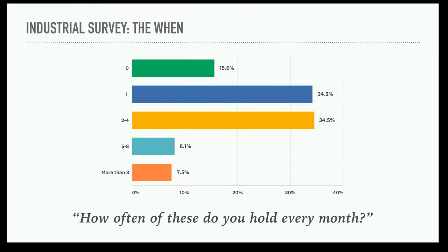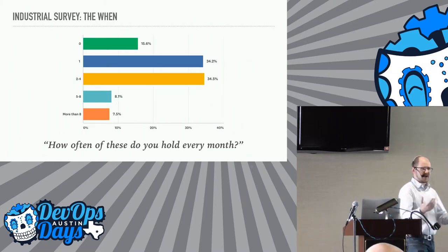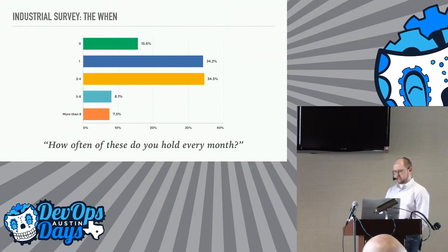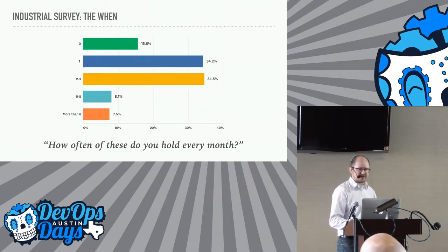Fifteen percent never hold one per month — don't hold a retro at all. Maybe their systems are stable and everything just works all the time. Most people do them about once a month or tending towards once a week. Interestingly, a group at the bottom does two or more a week. That's kind of interesting — two possibilities: their systems are incredibly unstable and they have outages all the time, or they post-mortem tiny things and their process is nimble and easy to do — sort of like the idea behind continuous delivery: ship more often, make it less painful.